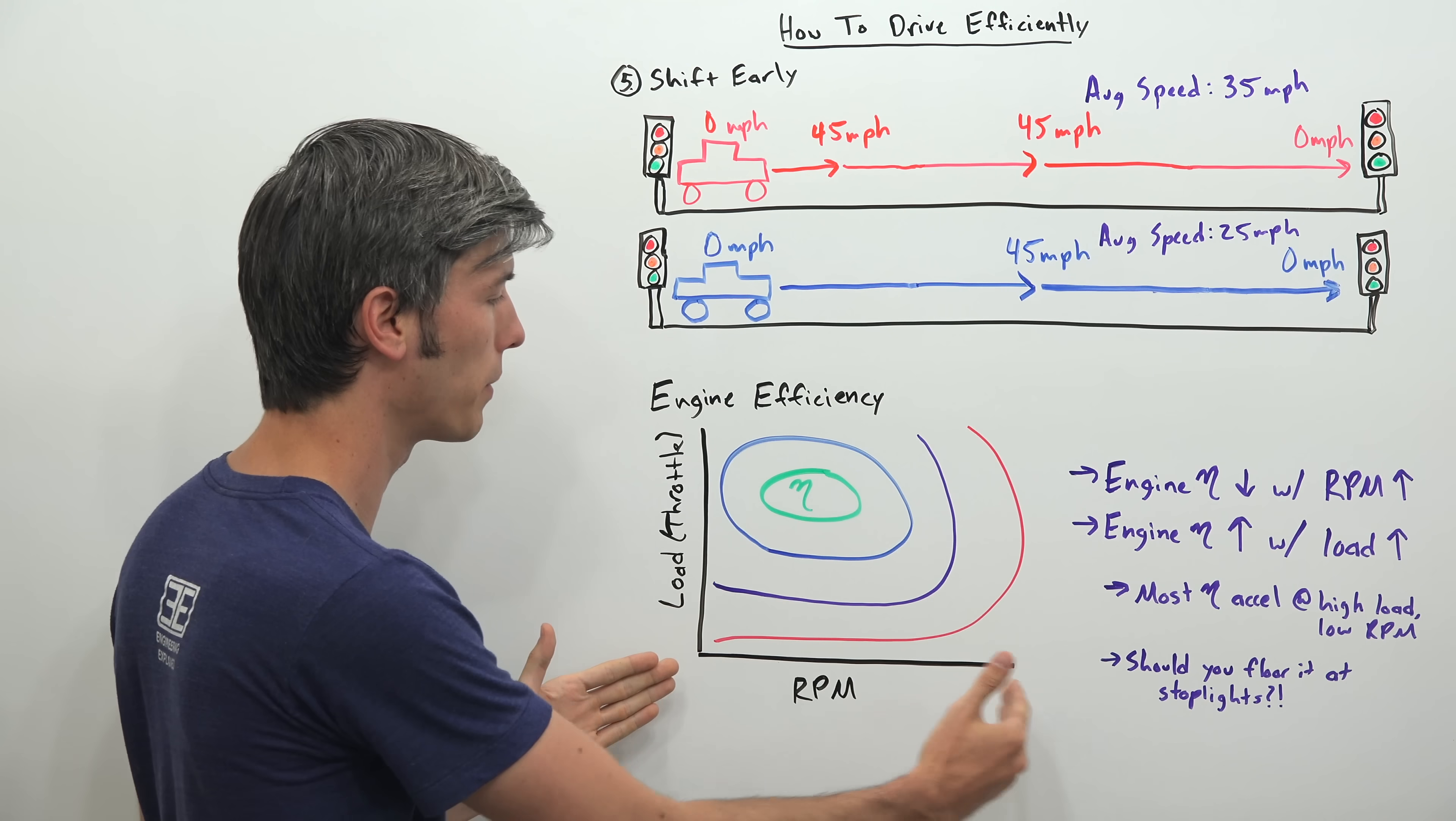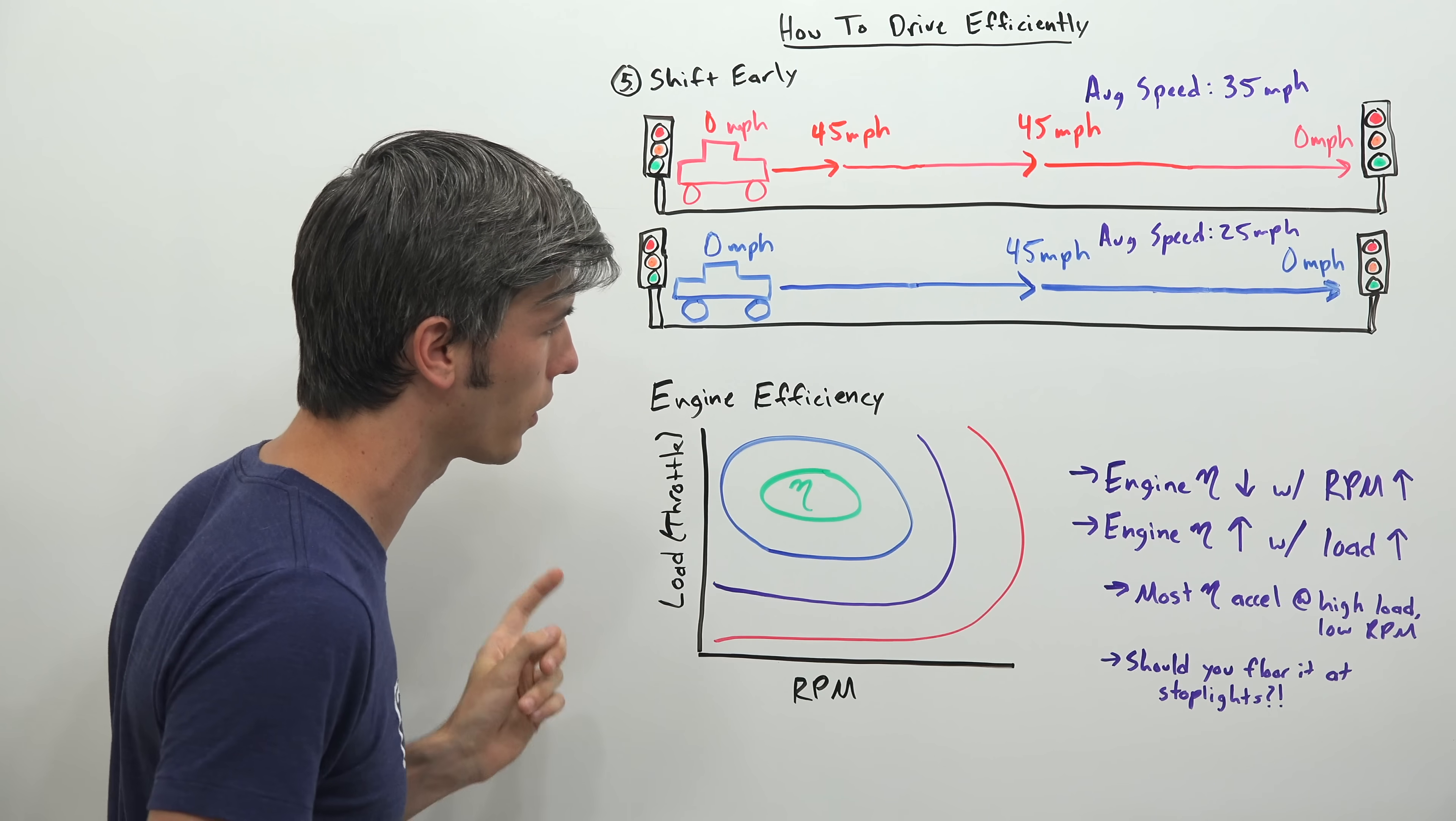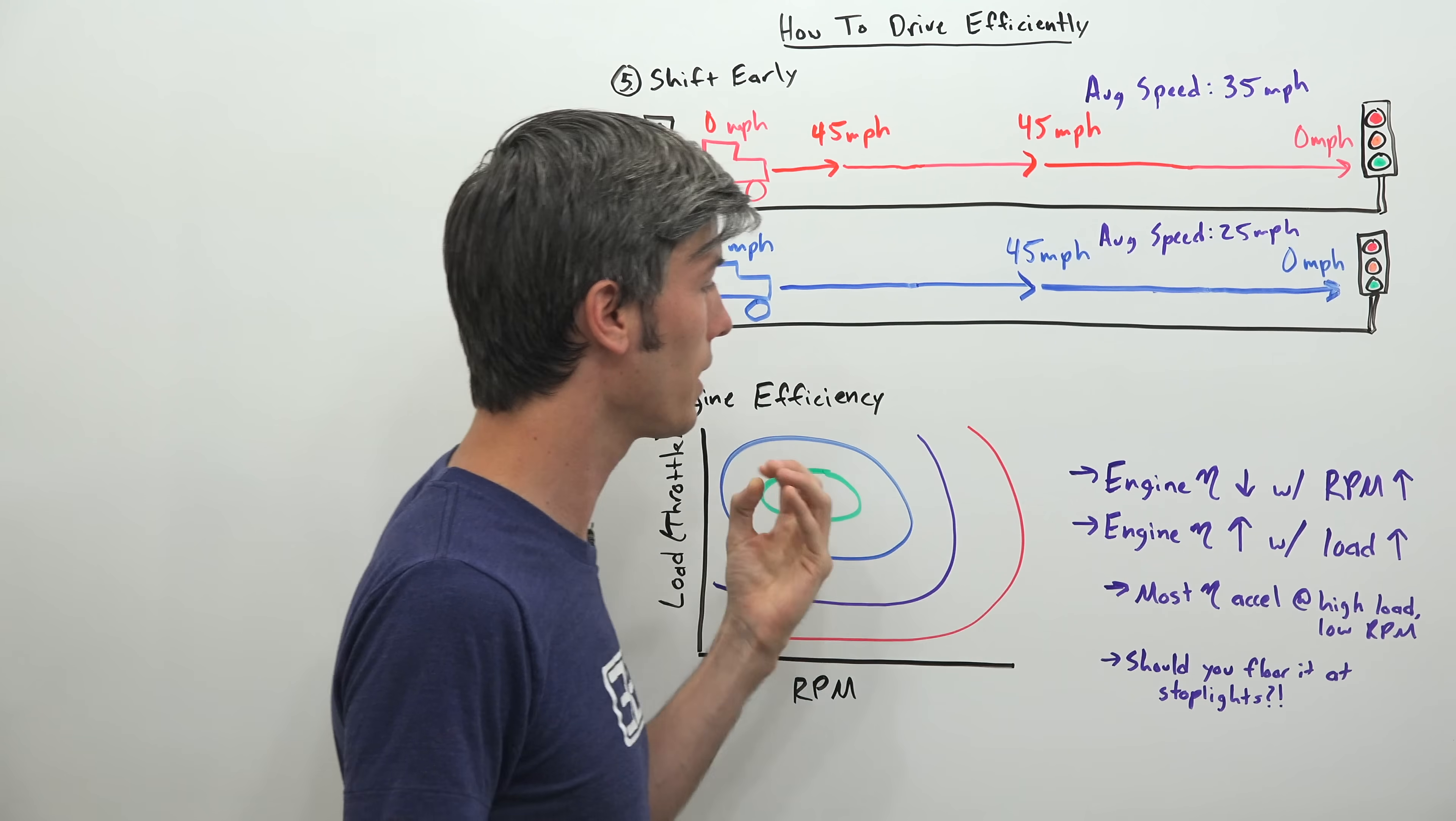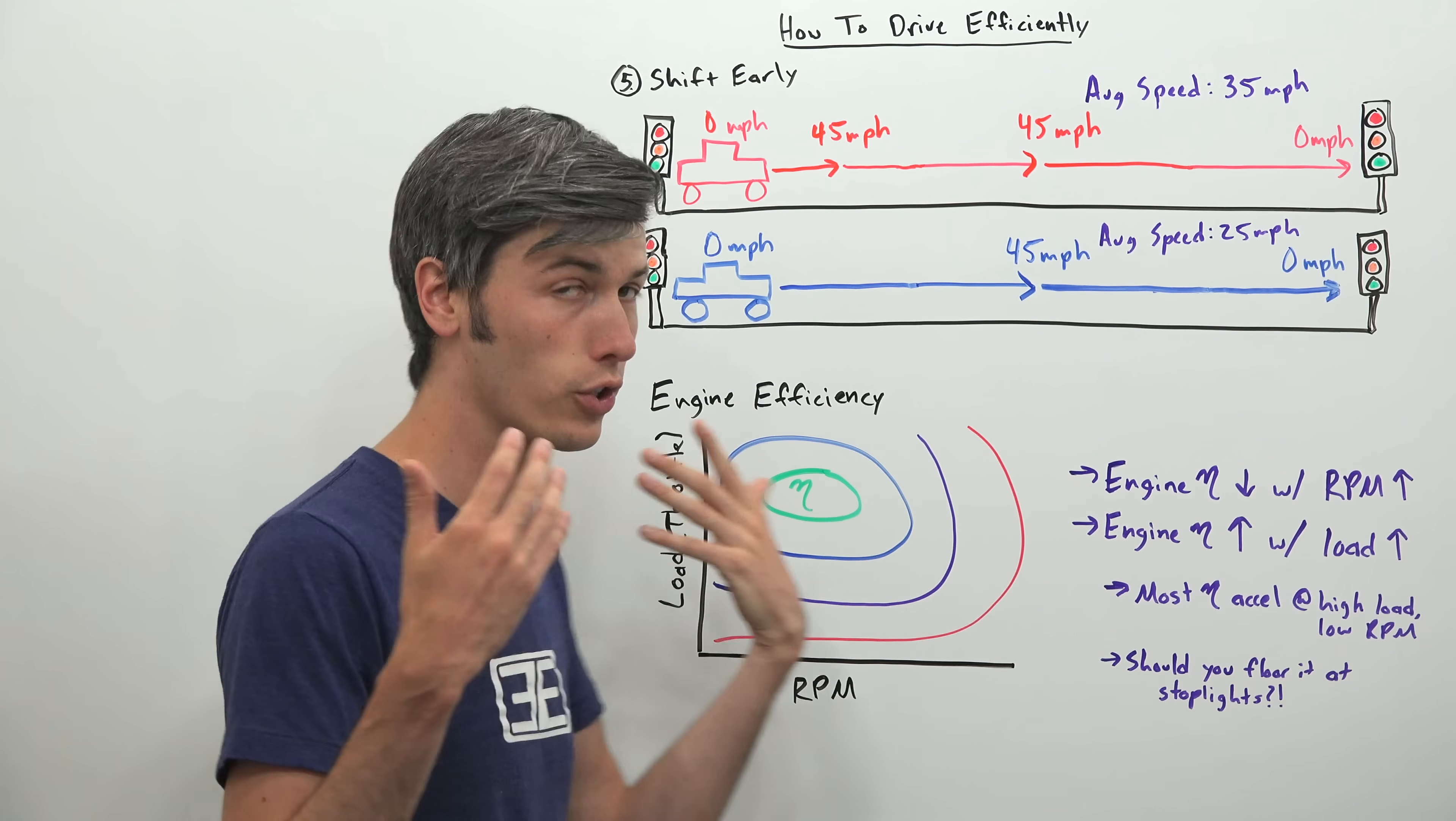As engine RPM increases, well then our engine efficiency is going to decrease. So we want to shift so we remain in this efficient region. But we're also learning that our engine efficiency is correlated with load. And the more load we have, generally speaking, the more efficient it is. So does that mean that you should be flooring it at every stoplight? Since we know that the highest efficiency occurs at a high load and a low RPM. And then just short shift.